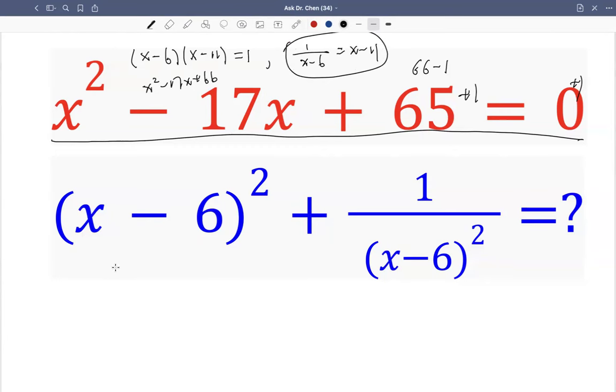Now coming here, we have x minus 6 squared plus 1 over x minus 6 squared. We can think of x minus 6 as one term, minus 1 over x minus 6 squared. What's the square of this?